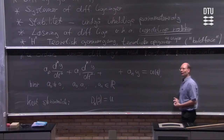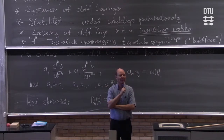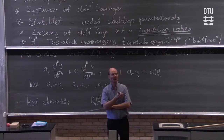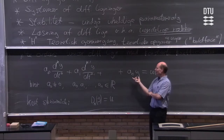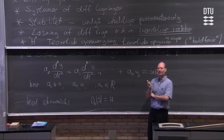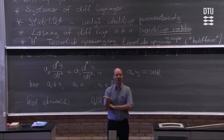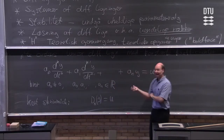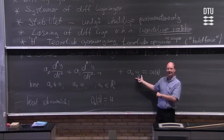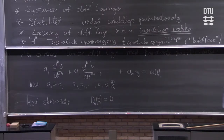Hvis I tænker lidt tilbage på matematik 1, begyndte I at løse ligninger af denne type ved først at kigge på de homogene ligninger. Når I havde løst dem, fandt I ud af, at der var et princip, der sagde: hvis I gerne vil finde alle løsningerne til den inhomogene ligning, kan I gøre det ved at finde én løsning til den inhomogene ligning og dertil lægge samtlige løsninger til den homogene ligning. Præcis de samme argumenter virker her. Så det er en rigtig god idé at starte med at kigge på den tilsvarende homogene ligning, altså med 0 på højre side.